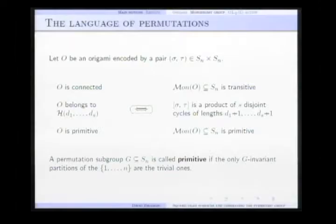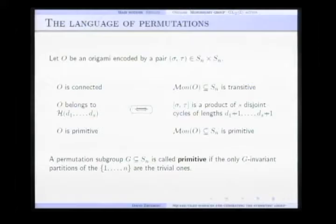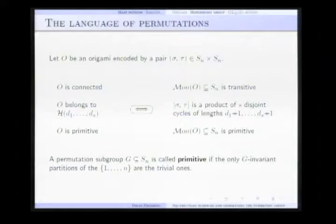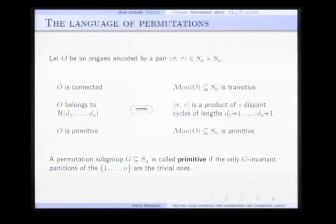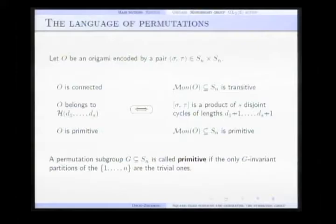This combinatorial description can be applied to study square-tiled surfaces by simple correspondence of notions. For instance, an origami is connected if and only if the monodromy group is transitive, and origami belongs to the stratum with parameters d1, etc., ds, if the commutator of the permutations is a product of disjoint cycles of length d1 plus 1, etc., ds plus 1. And a square-tiled surface is primitive if and only if the monodromy group is a primitive subgroup of Sn.